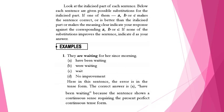Now let us see some examples. Look at the italicized part of each sentence. Below each sentence are given possible substitutions for the italicized part. If one of them — A, B, or C — makes the sentence correct, is better than the italicized part, or makes the meaning clear, indicate your response. If none of the substitutions improves the sentence, indicate D as your answer.